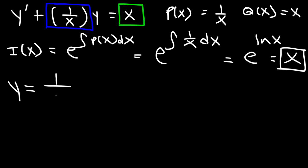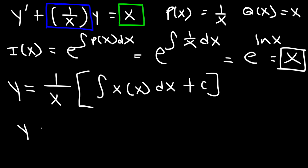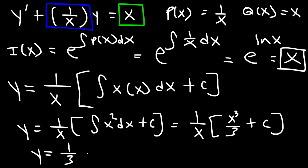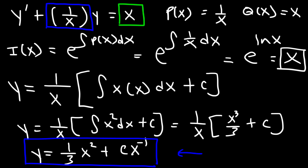Using the general solution: y equals 1 over x times the integral of x times x dx, plus c. x times x is x squared, and the antiderivative of x squared is x cubed over 3. Distributing 1 over x: x cubed over 3 divided by x is x squared over 3, plus c over x, which can be written as c times x to the negative 1. That's the final answer. Now you're familiar with solving first-order linear differential equations — practice harder problems from your textbook using the same process.